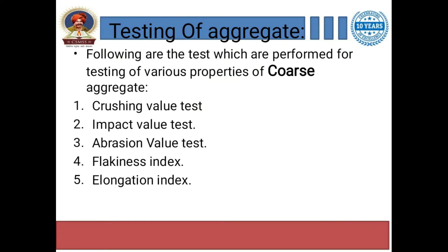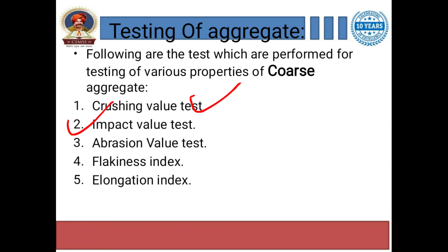First of all, we have to study what tests are performed on aggregate. There are majorly five tests: first is crushing value, then impact value, then abrasion value, next flakiness index, and last is elongation index. These are the five major tests performed on aggregate. Write these tests down in your notebook.